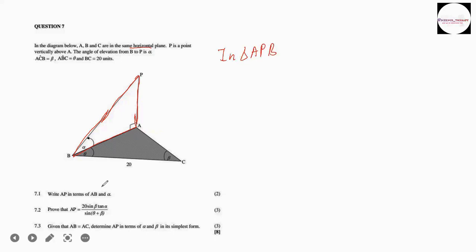7.1 says write AP in terms of AB and alpha. So we can see everything that they've talked about, the AP, AB, and alpha are all in this triangle here, triangle APB. So we're going to say in triangle APB, this is what we have. Now, according to Sokka Towa, what trig ratio should we use now? We should use tan, because we have the opposite side and the adjacent side. So this will be tan alpha. Our opposite is AP, but our adjacent is AB. But then we are supposed to make AP the subject of the formula, so that's AP is equals to AB tan alpha. Right, so for two marks, that's all you were supposed to do.